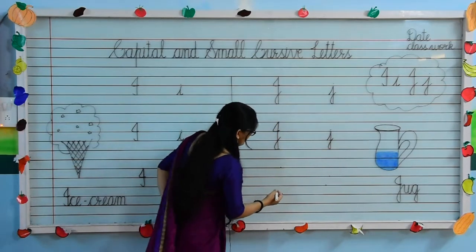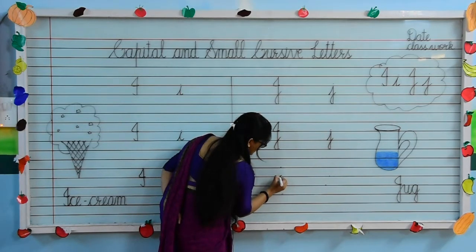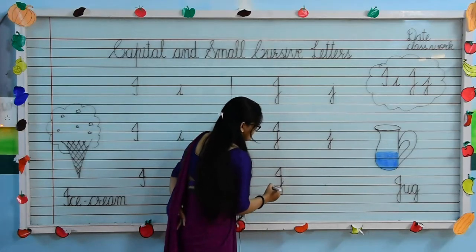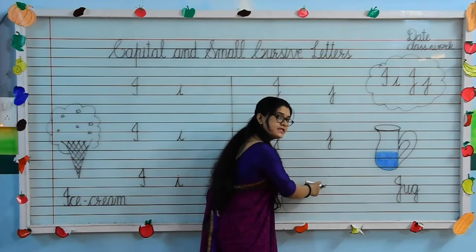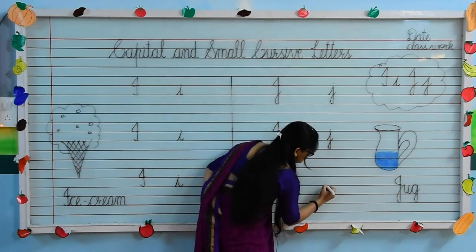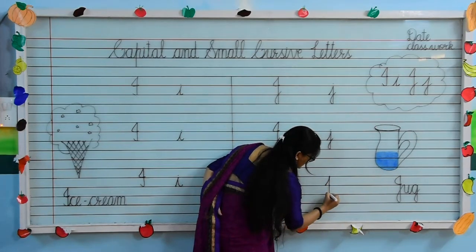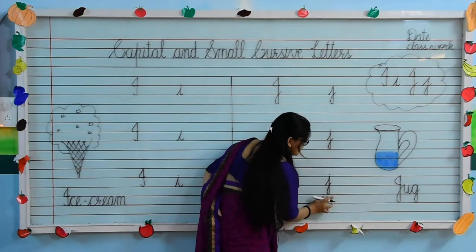Again we will write. Put your pencil on the second line, draw sleeping line, slanting, touch the first line, standing line, moving towards the fourth line, touch and small loop. Small cursive J. Put your pencil on the third line, slanting, standing, touch the fourth line and small loop. Small cursive J.